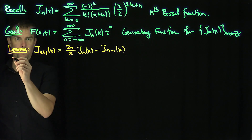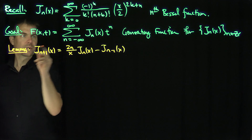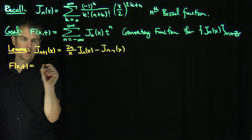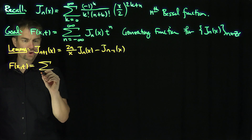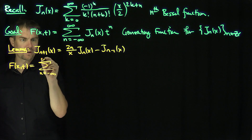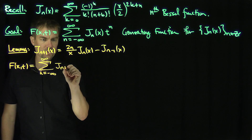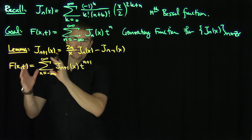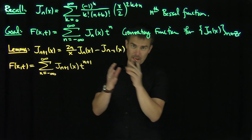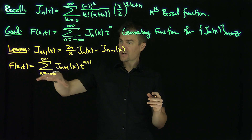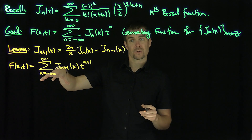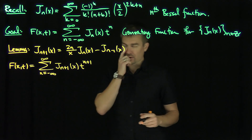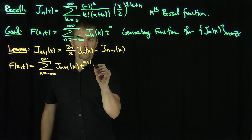We'll come back to the proof of the lemma in a second. Now, for the proof of the generating function: what can I say about f of x and t? I'm going to do one trick — just shift everything over. The sum over n from negative infinity to infinity of j_{n+1} of x times t^{n+1}, because shifting n to n+1 doesn't change anything since we're summing over all integers. Now I can use our recursion relationship.